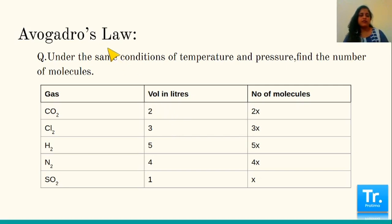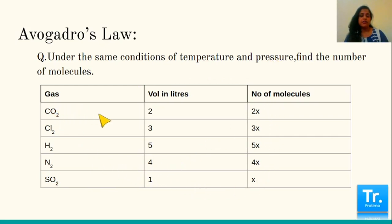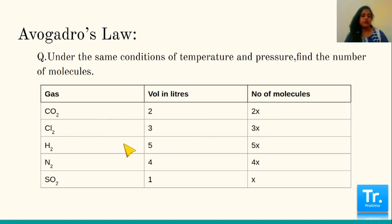One more question on Avogadro's law using a table. Under the same conditions of temperature and pressure: if 1 volume of sulfur dioxide has X molecules, then 2 volumes of carbon dioxide has 2X molecules, 3 volumes of chlorine has 3X molecules, 5 volumes of hydrogen has 5X molecules, and 4 volumes of nitrogen has 4X molecules.